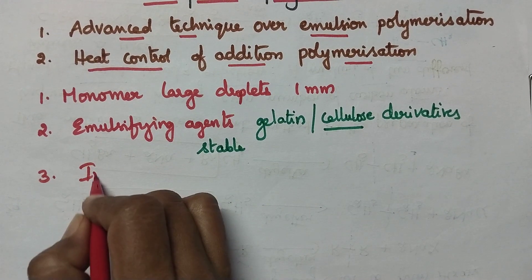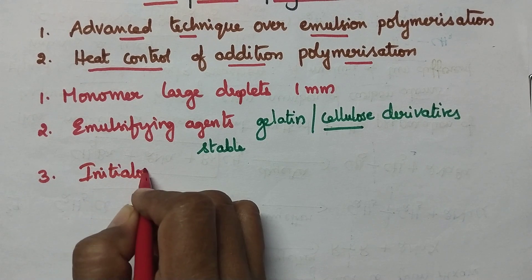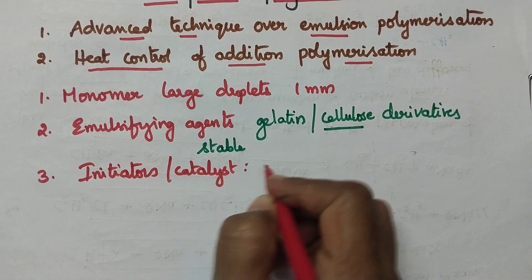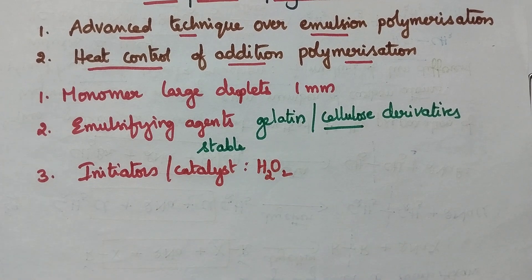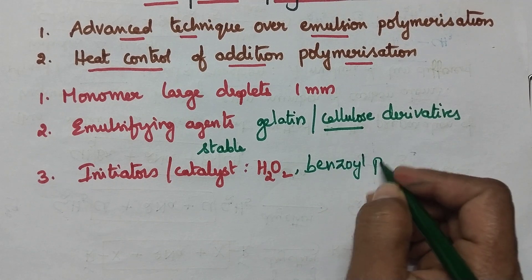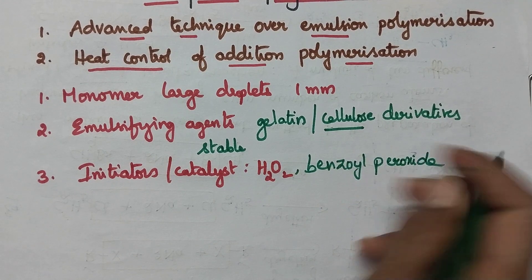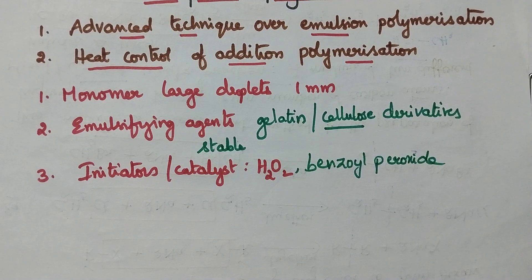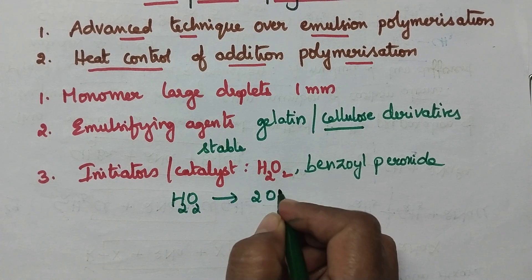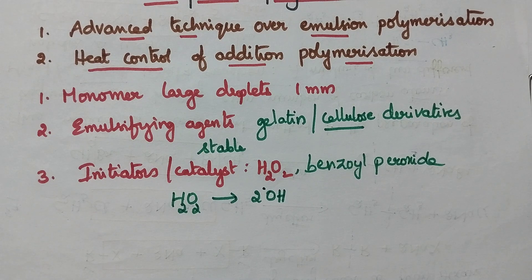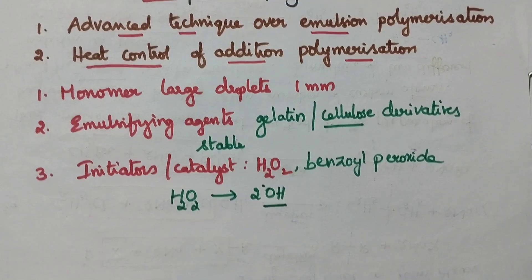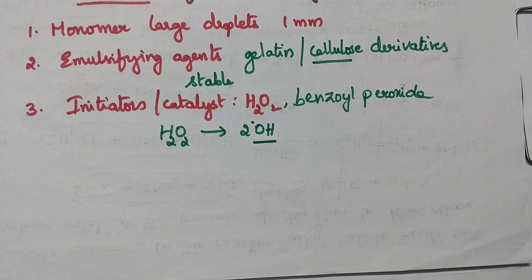Then initiators are added — initiators act as the catalyst. Catalysts such as hydrogen peroxide or benzoyl peroxide will be added. Whenever a catalyst like benzoyl peroxide is added, it dissociates to give hydroxy free radicals, which act as initiators, and then polymerization takes place.